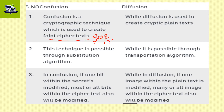Confusion is used to create substitution, while diffusion is used to create transposition. Confusion is a cryptographic technique used to create substitution, while diffusion is used to create transposition.